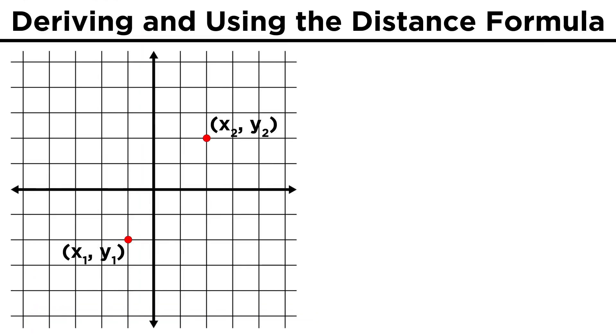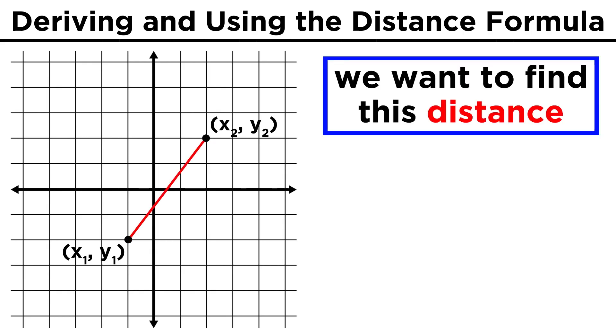Otherwise, let's just select two points in the coordinate plane and draw a line between them. The length of this line is what we are trying to figure out, and in order to get it, we can make a right triangle.